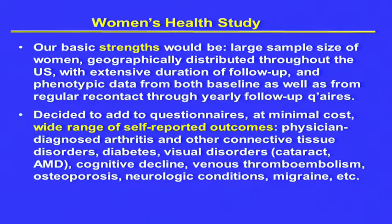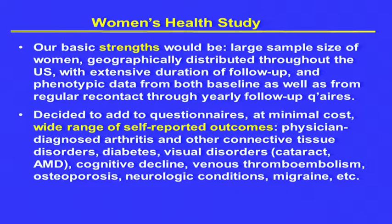Our basic strengths would be a large sample size of women, geographically distributed throughout the United States, with extensive duration of follow-up and phenotypic data from baseline, as well as regular recontact through yearly follow-up questionnaires. We added, at minimal cost, questions to our questionnaires not directly related to our trial — a wide range of self-reported outcomes: arthritis and connective tissue diseases, diabetes, visual disorders, cognitive decline, venous thromboembolism, osteoporosis, neurologic conditions, migraine, and whatever else we could fit on the questionnaire.